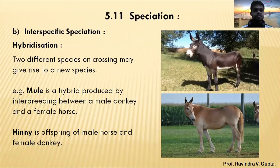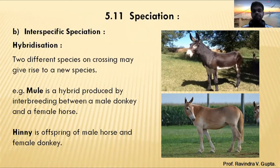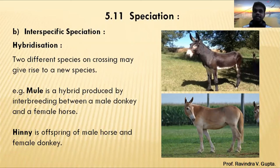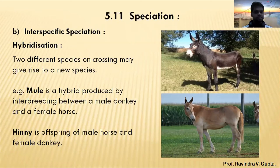The next type of speciation is interspecific speciation. In intraspecific speciation, one species forms a different species — 'intra' means within. 'Inter' means between two different types. When two different types of species are crossed, there will be a formation of a new species — that is called interspecific speciation.